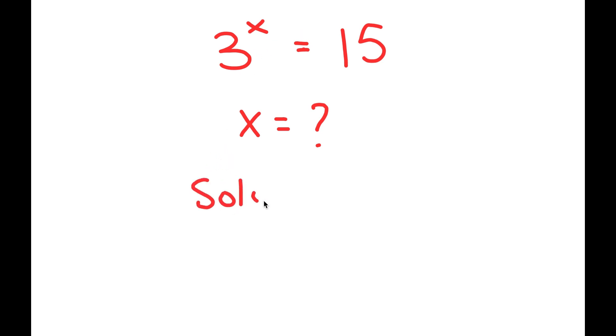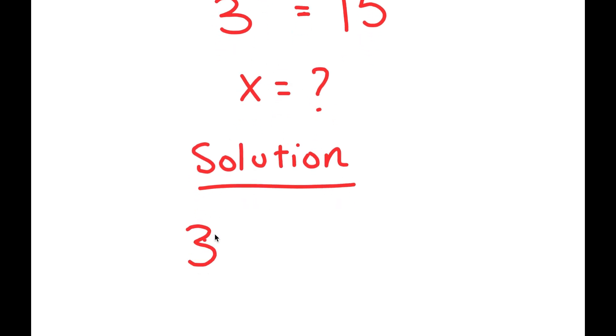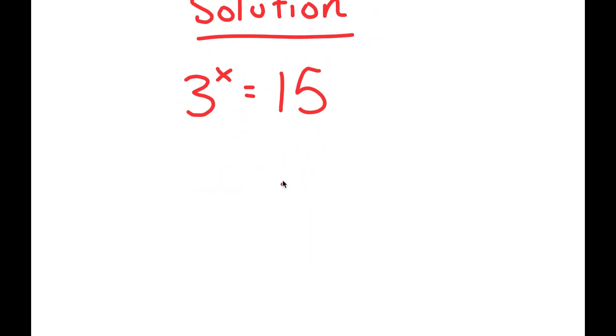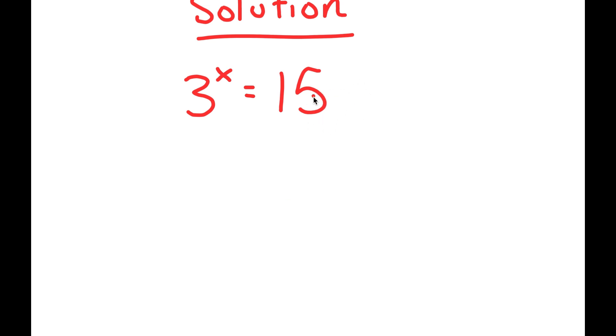And now for my solution. So let me first start by rewriting my equation down here. 3 to the power of x is equal to 15. And 15, I can rewrite this as 3 times 5.